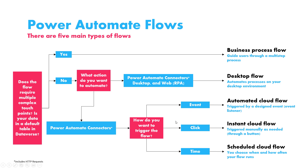The second type is click — meaning you trigger the action whenever you want by clicking a button. For example, if you want to send a congratulations message to everyone in your Slack group after a big steering committee meeting, instead of messaging everyone individually, you can create a flow triggered by the click of a button that sends the message to everyone you specify. The trigger is based on when you choose to do it.